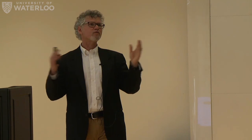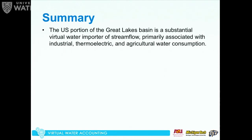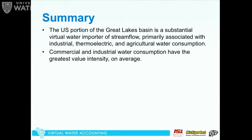It's much more fun to talk about water scarcity, but in reality we may have negative water scarcity — an interesting concept. To summarize, the big takeaway is that the US portion of the Great Lakes is a substantial net virtual water importer. The use categories of industrial, thermoelectric, and agriculture are the reasons why. The industrial value intensity was substantially higher than many others — every cubic meter used for industry generates more value because industrial goods generate greater dollars than agricultural goods, and we tend to use less water in manufacturing than in growing crops.